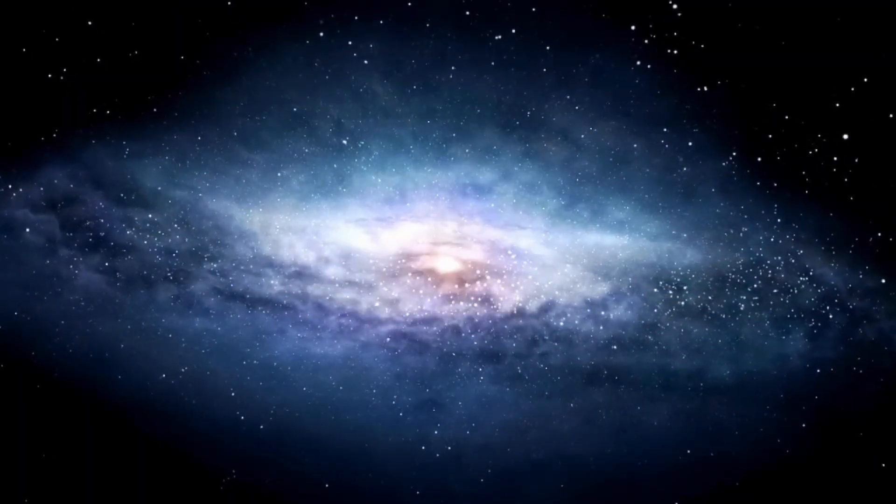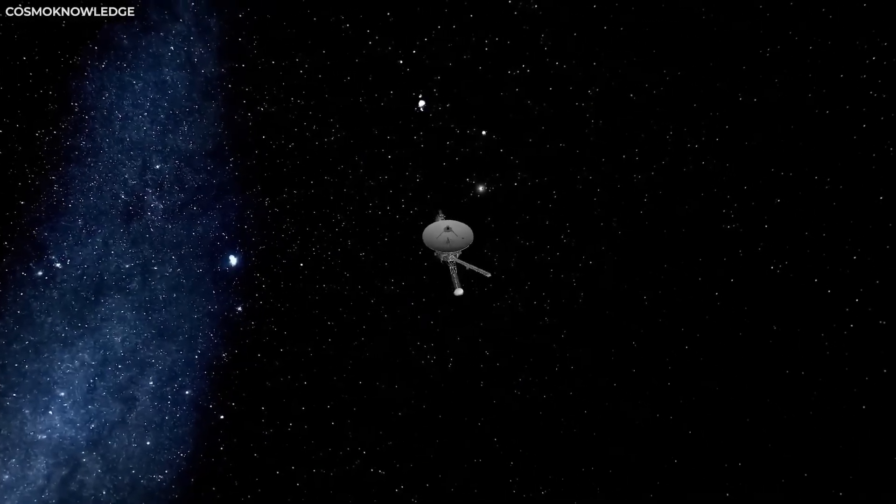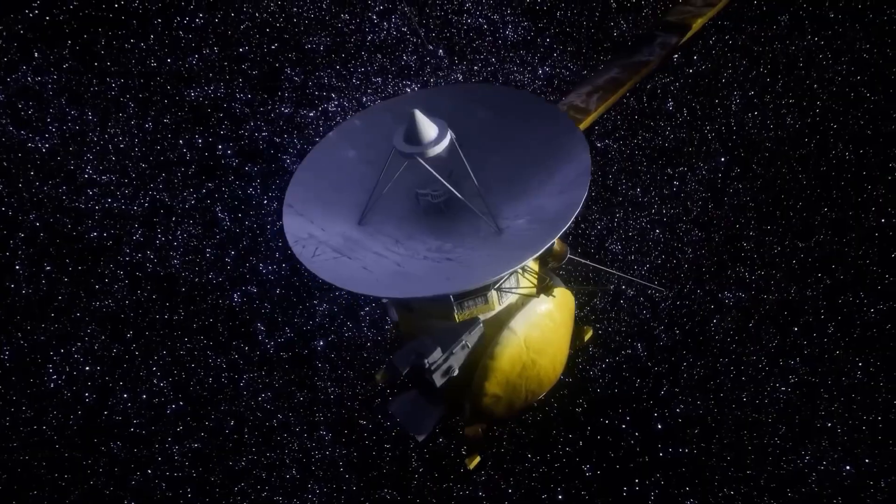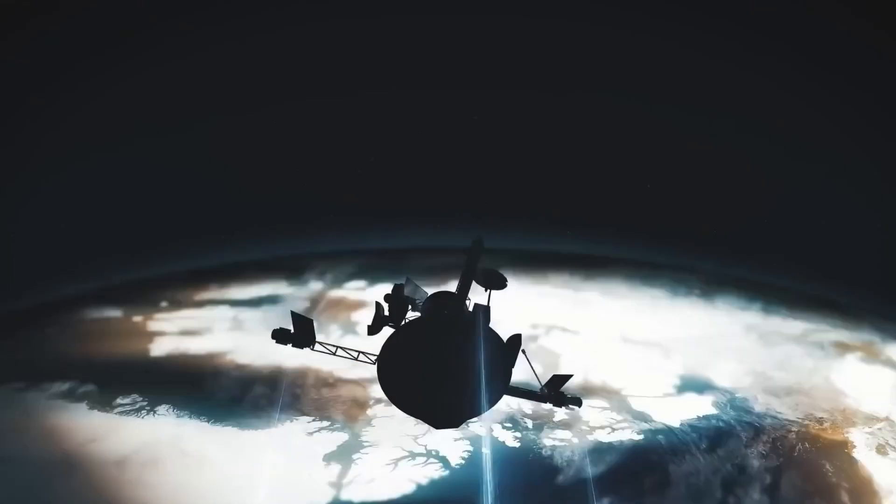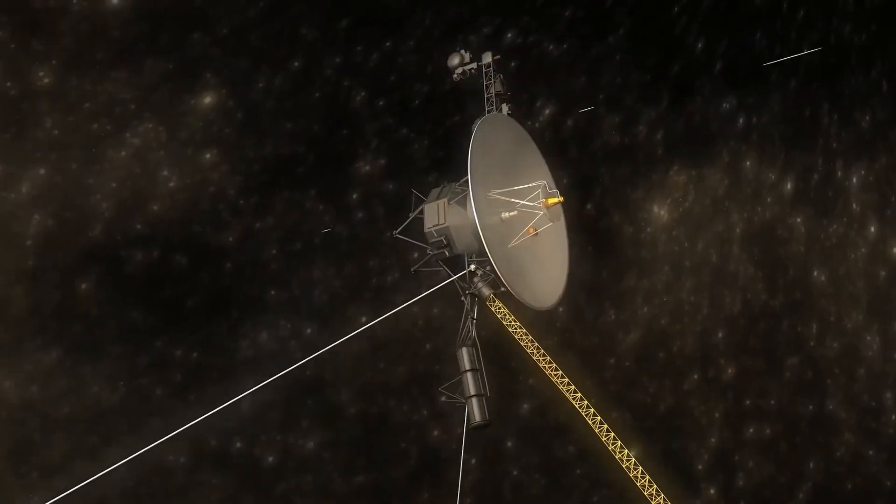The signal intensified for three weeks, then abruptly ceased. Examination of the final readings showed faint voltage fluctuations in the magnetometer, a binary code matching the golden record's first audio track: Greetings from Earth. Voyager 1 hadn't merely looked back. Something had returned the gesture.